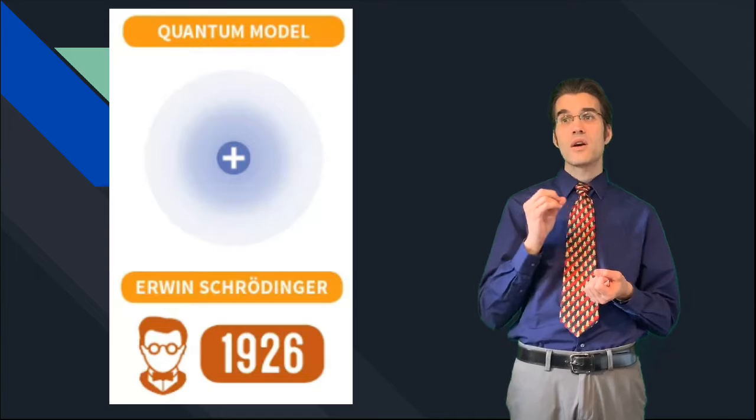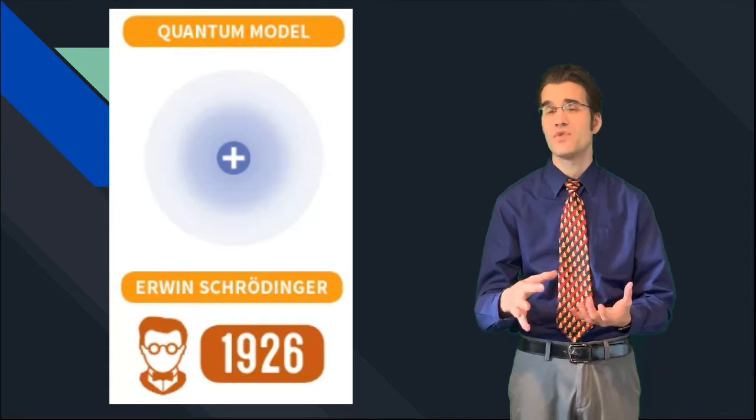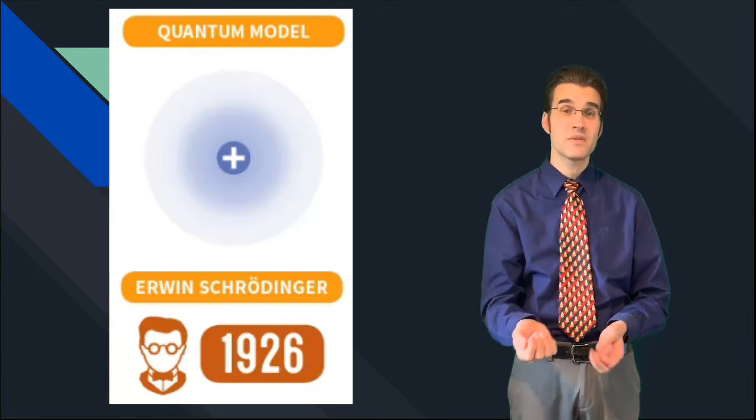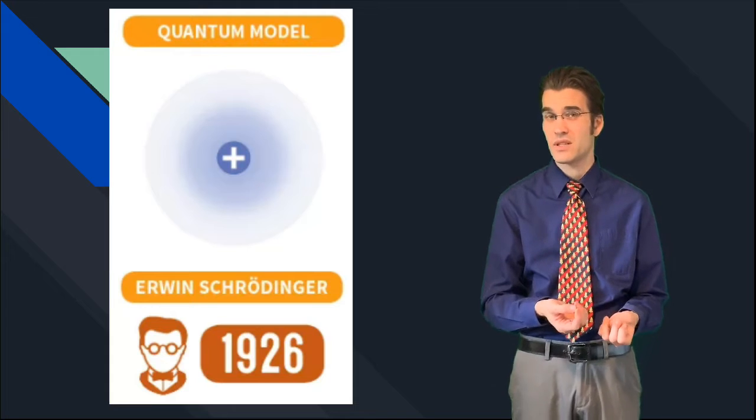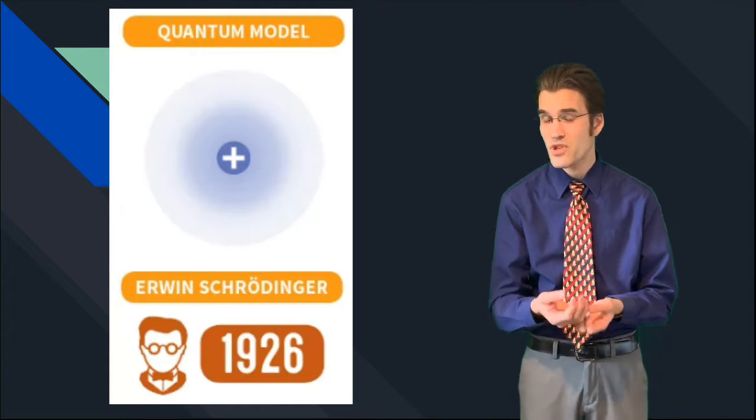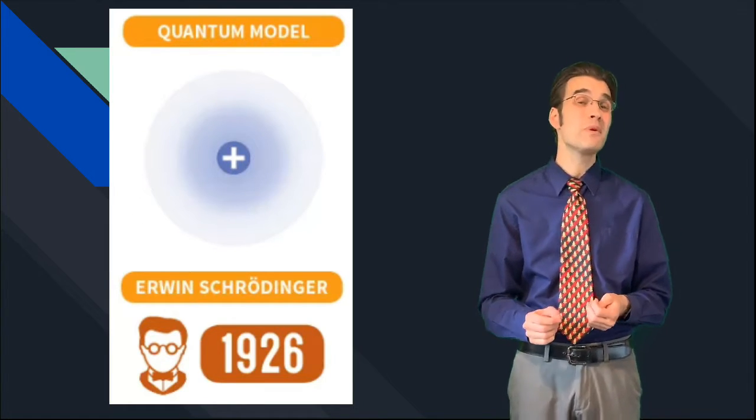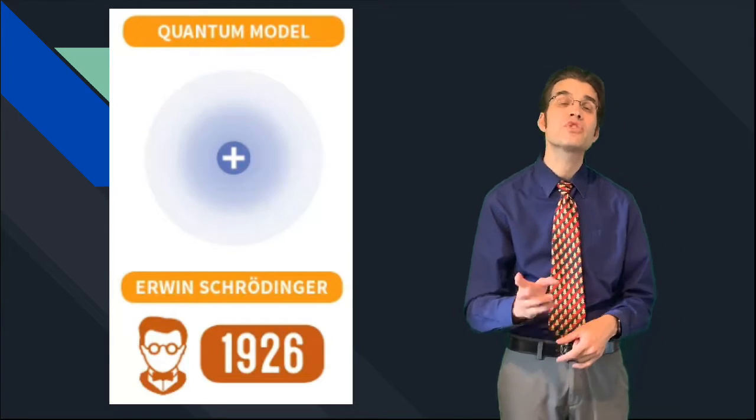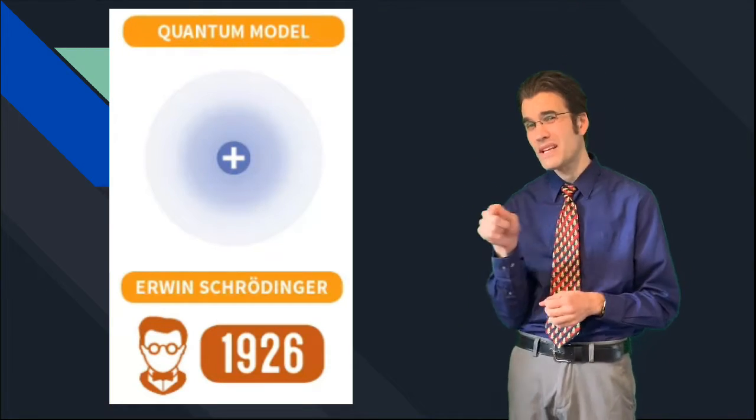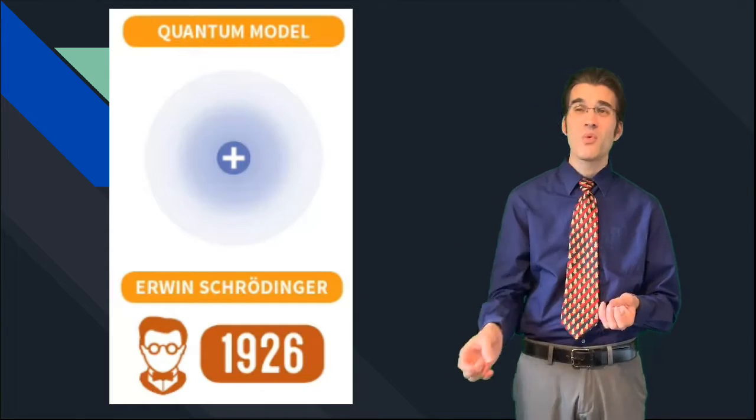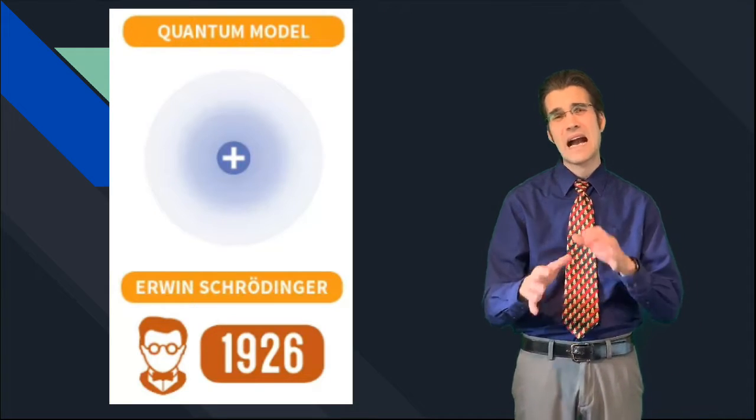Then we get to the quantum model. Erwin Schrödinger in 1926 came up with the quantum model, and this is what we kind of use today. It looks different than what you commonly see when you Google the atom, but we realized that we can't really predict exactly where these electrons are. We can't really see them, they're so small. What we realized was that we were going to have to come up with a probability or estimated location of these electrons. It's more like a cloud, so we can't pinpoint exactly where these electrons will be. We can simply say there's a pretty good chance that if you look in this area, that's where they're going to be, and that's why it kind of looks like a cloud.